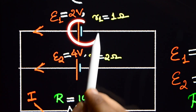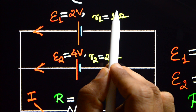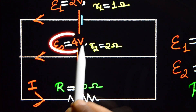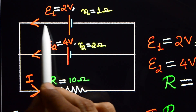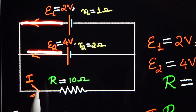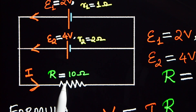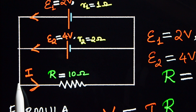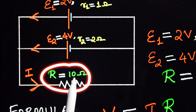Here, this is cell number 1 and this is cell number 2. First cell has EMF E1 equal to 2 volt and internal resistance R1 equal to 1 ohm. Second cell has EMF E2 equal to 4 volt and internal resistance R2 equal to 2 ohm. These two cells are connected in parallel to send current in the same direction, and connected to an external resistor of 10 ohm. We need to find the potential difference across this 10 ohm resistor.